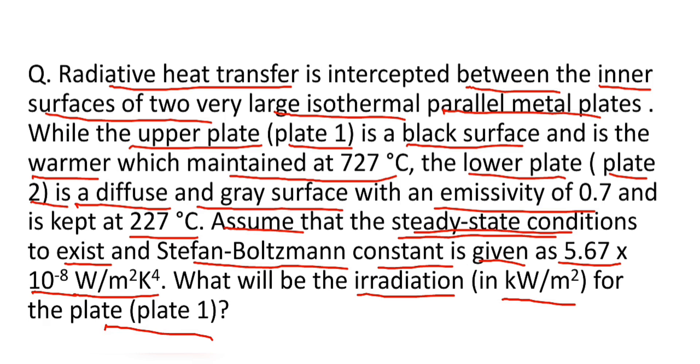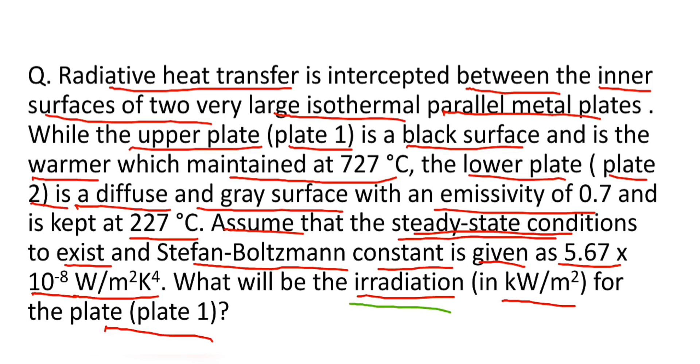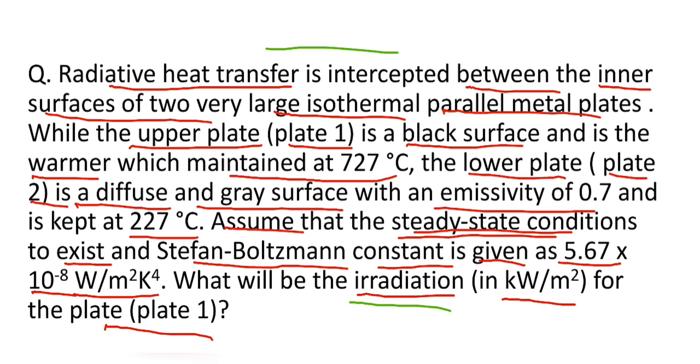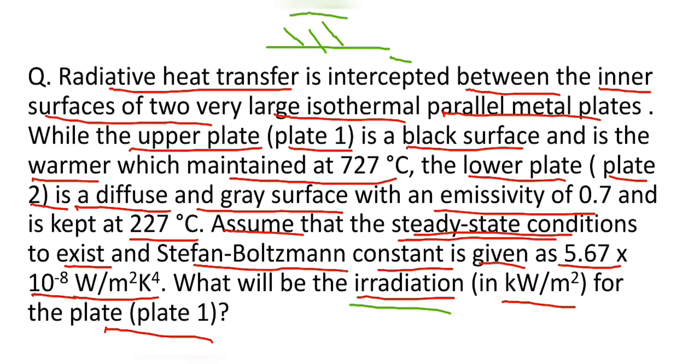So before going to solve this problem, first we understand what is irradiation. Irradiation is the total amount of radiation incident on a surface. Suppose this is a surface and radiation is incident on this, then the irradiation is sum of all this radiation. So guys I hope you have understood till now.